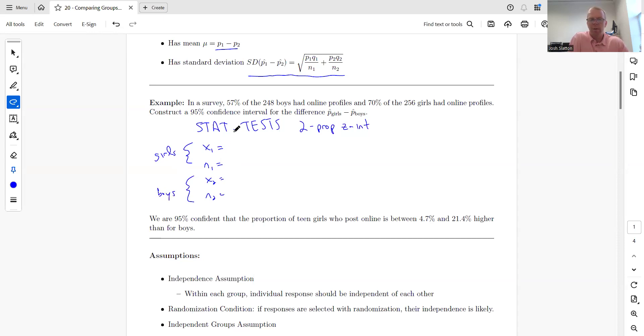x is just the number of successes, so how many exactly had online profiles. We're looking at the girls, so 0.70 times 256. We multiply that and we get 179.2. The calculator does not like a decimal in that spot, so you need to round to the nearest integer.